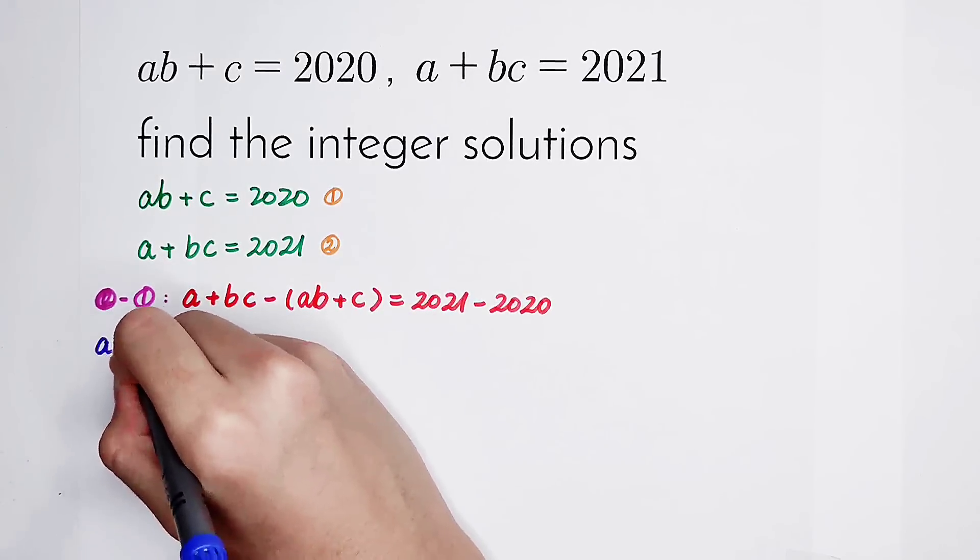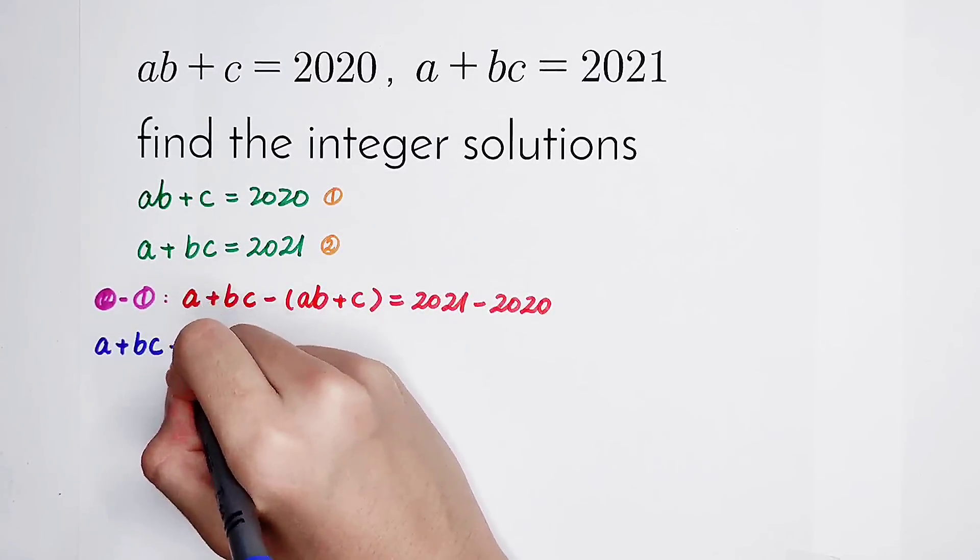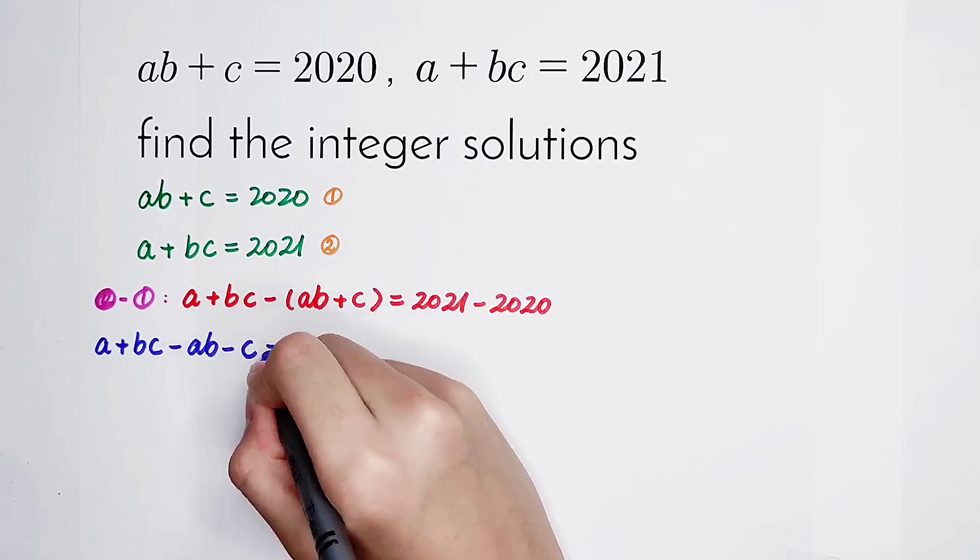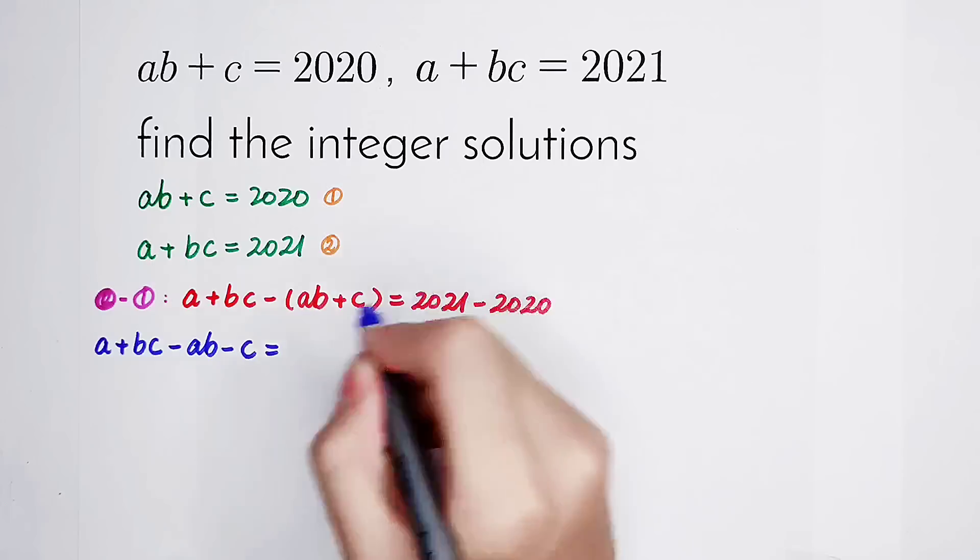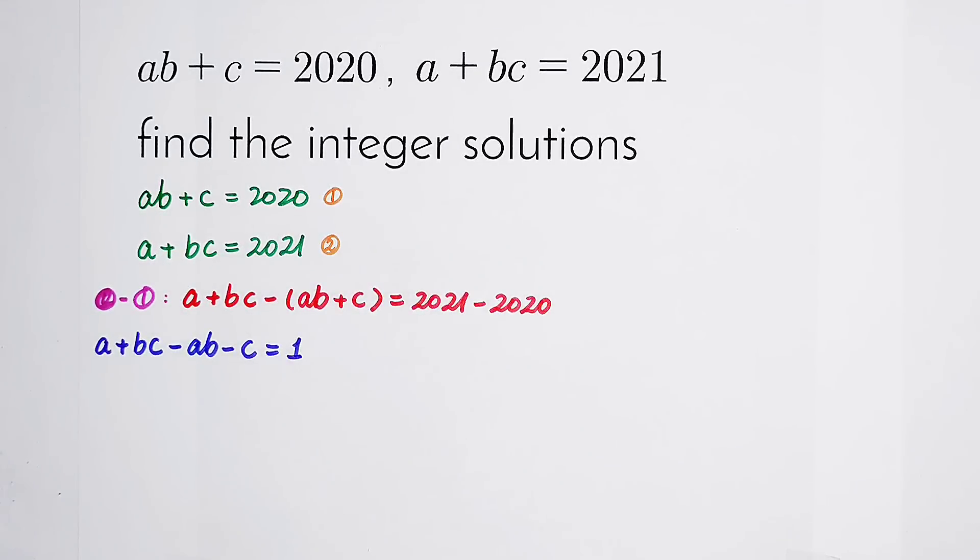And now, two sum changes. A plus BC minus AB minus C is equal to 2021 minus 2020, it is one. Wonderful, isn't it?